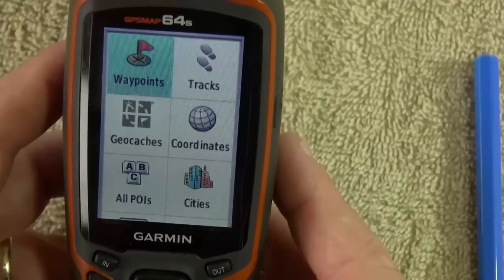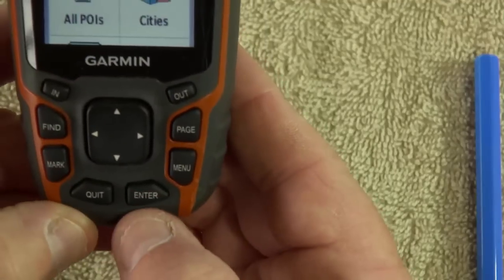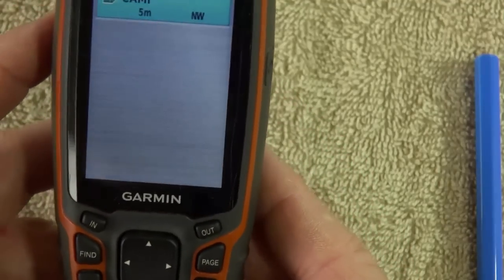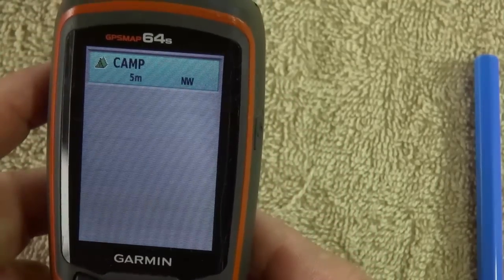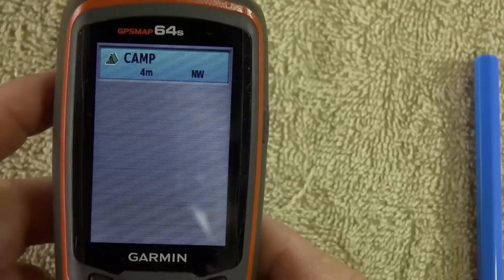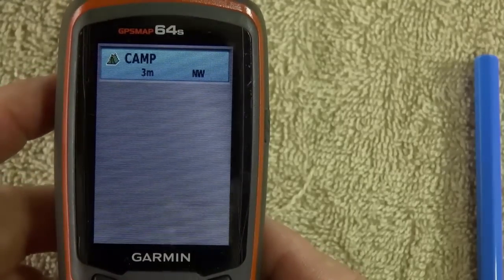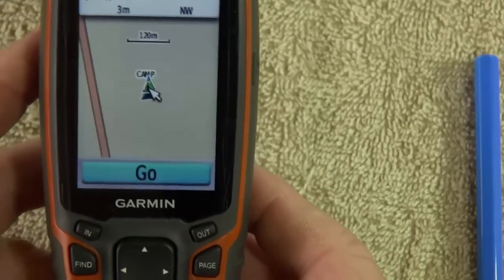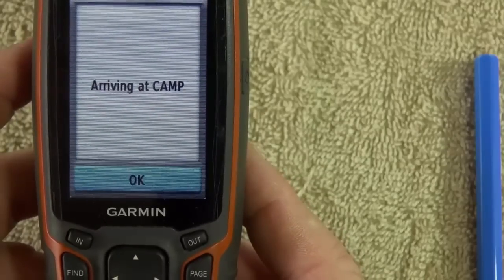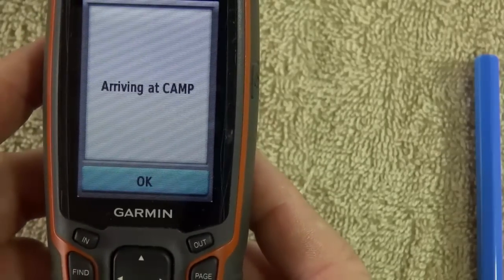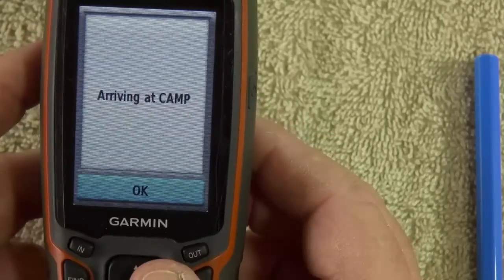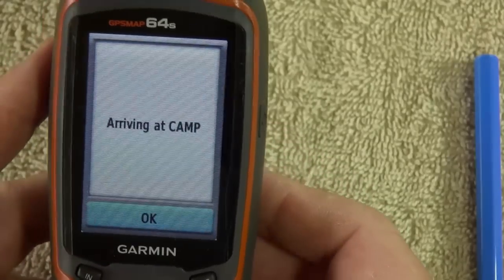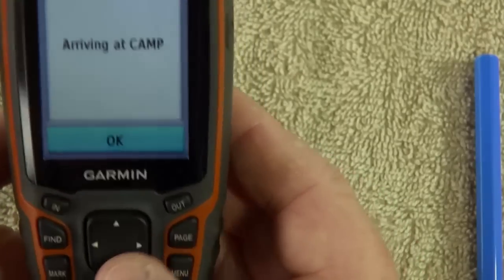Okay, waypoints is lit up. Enter. That's what we want. Always enter for what you want. There's camp. It's the only one that's on there because I've cleared the memory. So it's the only one on there. That's the one we want. Enter. And you press go. Well, as you can see, we still haven't gone anywhere. So we're on it. But just for the sake of it, we're pretending.